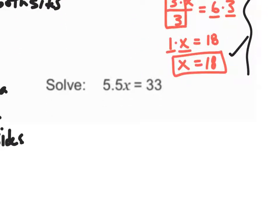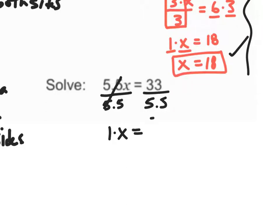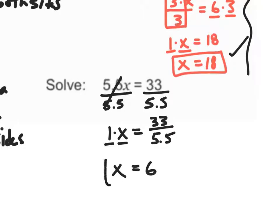Let's solve: 5.5 times x is equal to 33. Notice that when we have 5.5x, the number is next to my variable, which indicates we are multiplying. The opposite of multiplying by 5.5 would be dividing both sides by 5.5. 5.5 divided by 5.5 gives 1, leaving 1 times x equal to 33 divided by 5.5. 33 divided by 5.5 gives me 6, so x is equal to 6.